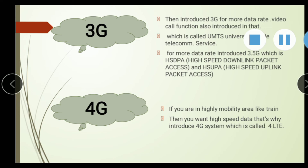Then 4G was introduced. If you are in a highly mobile area like a train, the speed should remain constant. For high-speed data with mobility, 4G was introduced, which is called 4G LTE.